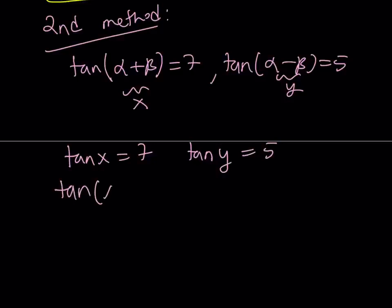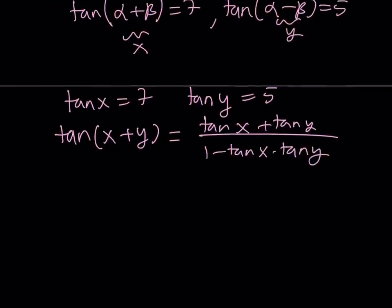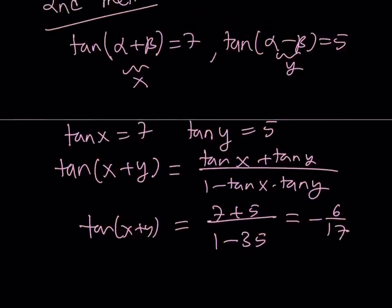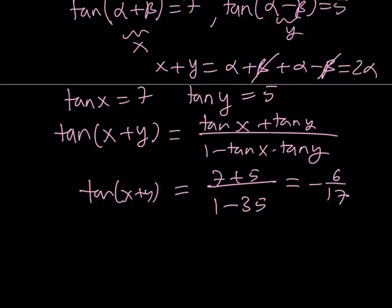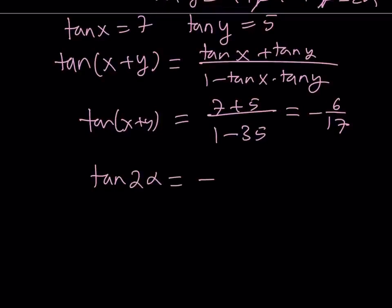Tangent x plus y can be found from here because it is tangent x plus tangent y divided by 1 minus tangent x times tangent y. We use the sum formula again. So now this is 7 plus 5 divided by 1 minus 7 times 5, which is 35. So tangent x plus y can be written as 12 over negative 34, which should be simplified as negative 6 over 17. Now here's one thing I want you to notice. x is alpha plus beta, y is alpha minus beta. So what is x plus y? x plus y is alpha plus beta plus alpha minus beta. You can cancel out the betas and you end up with 2 alpha. So this is tangent 2 alpha, which is equal to negative 6 over 17.